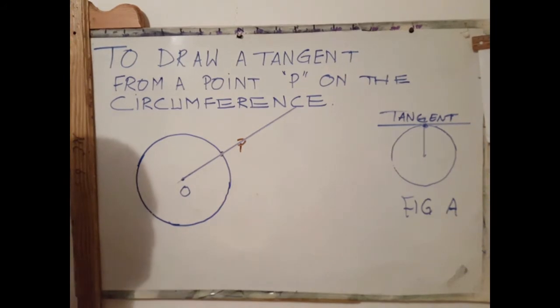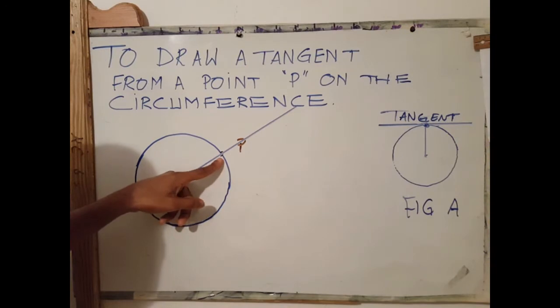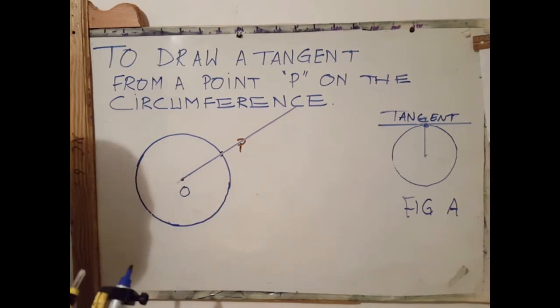It means therefore that we will be constructing a 90 degree angle at this point. To do that, we first open the compass to a suitable radius.